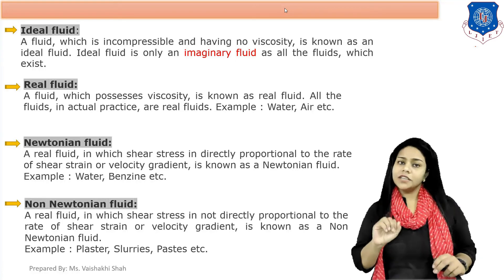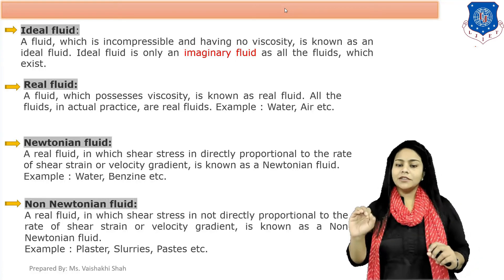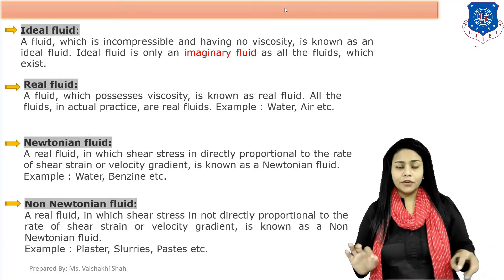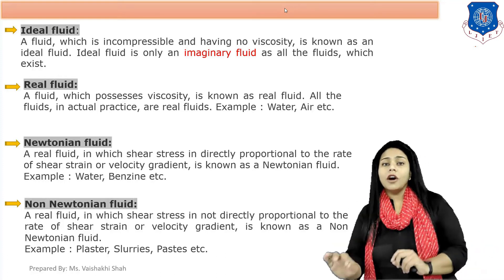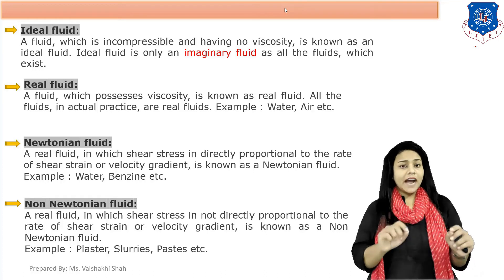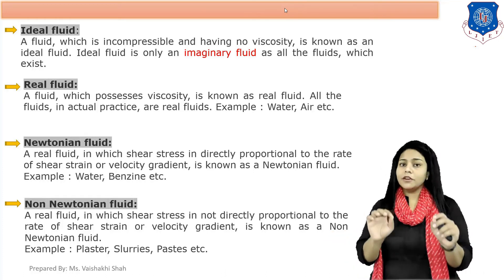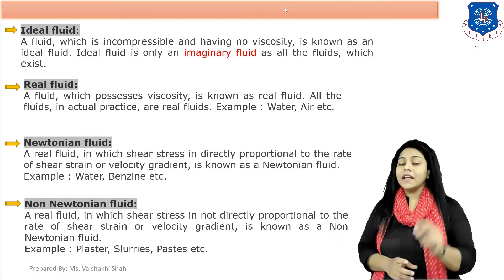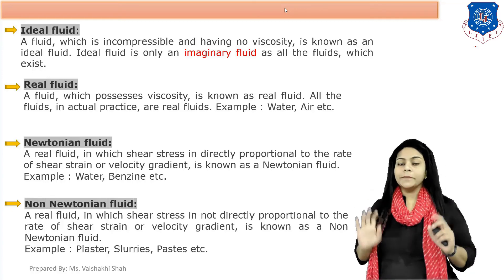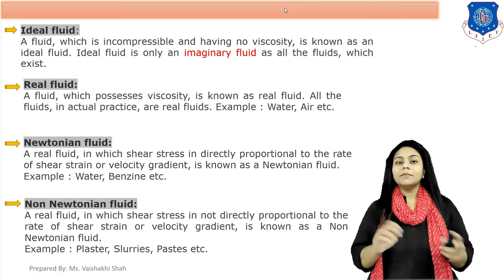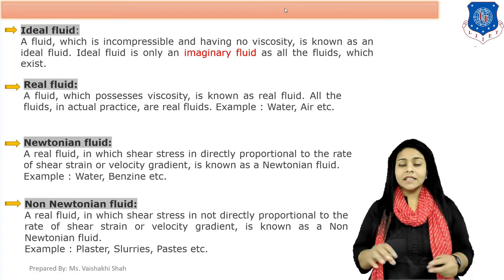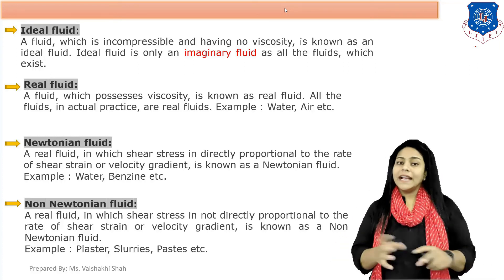Next is non-Newtonian fluid. Here tau is shear stress and du/dy is shear strain rate. If in any fluid tau is not proportional to du/dy, that fluid is called a non-Newtonian fluid. Examples of non-Newtonian fluids are plaster, paste, gel, etc.